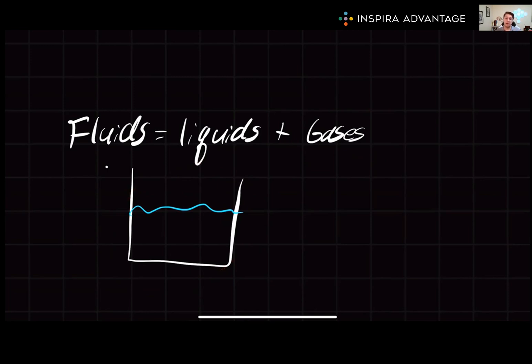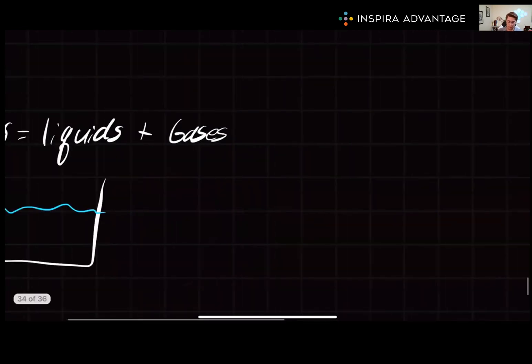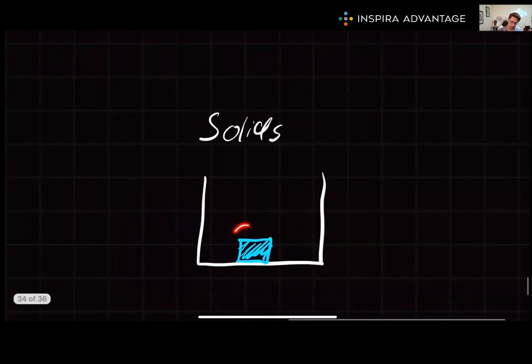Fluids exert perpendicular forces, also known as normal forces, but they cannot exert shear forces. Solids, on the other hand, do not flow and maintain their shape regardless of the container. In this case, our solid is just a little blue box sitting in the overall beaker.